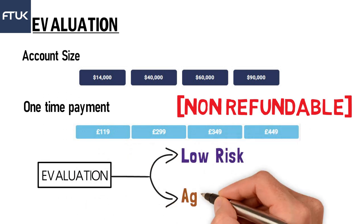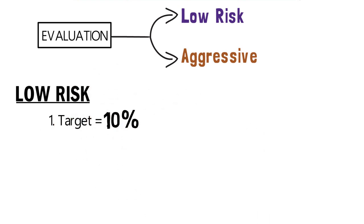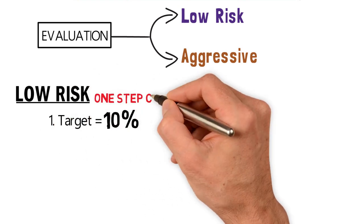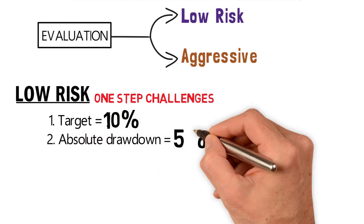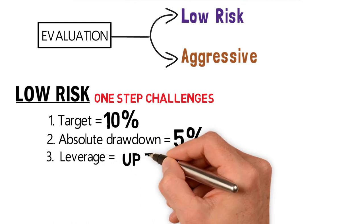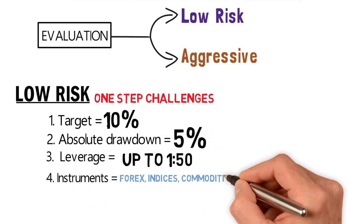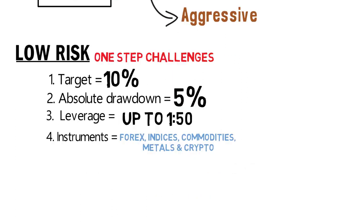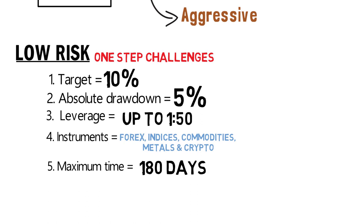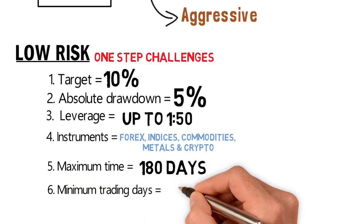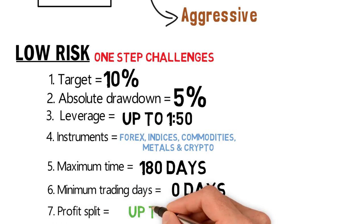In the Evolution program, they have two modes: Lorix mode and Aggressive mode. In Lorix mode, the profit target is 10%, the absolute drawdown is 5%, and the leverage is up to 1:250. Instruments include forex, indices, commodities, metals, and crypto. The maximum time limit to achieve the target is 180 days (six months), minimum trading days is zero, and the profit split is up to 80% once you get funded.